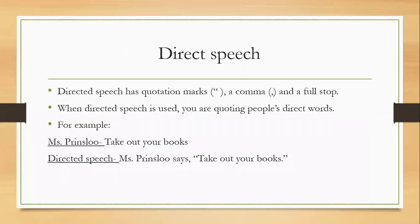With reported speech, we have to know the difference between direct and indirect speech. Direct speech has quotation marks, a comma, and a full stop. You will always know that this is direct speech — when direct speech is used, you are quoting people's direct words. Look at the example: Miss Prinsler says, comma, quotation mark, 'Take out your books,' full stop, end quotation marks. This is the format you will follow everywhere.